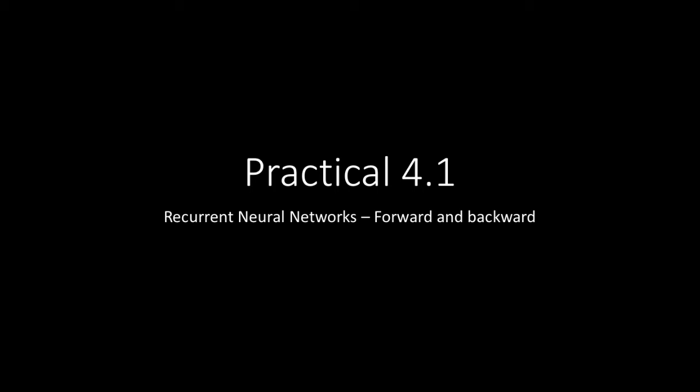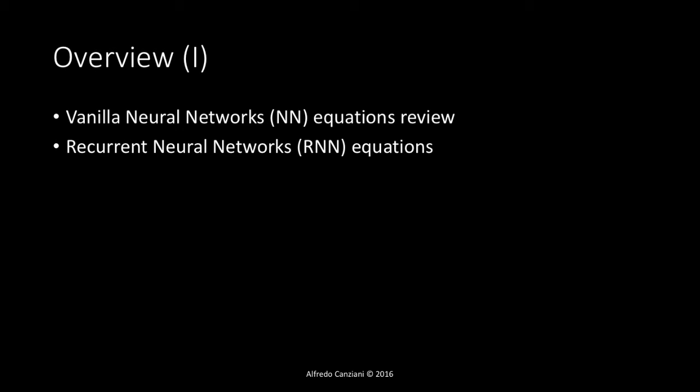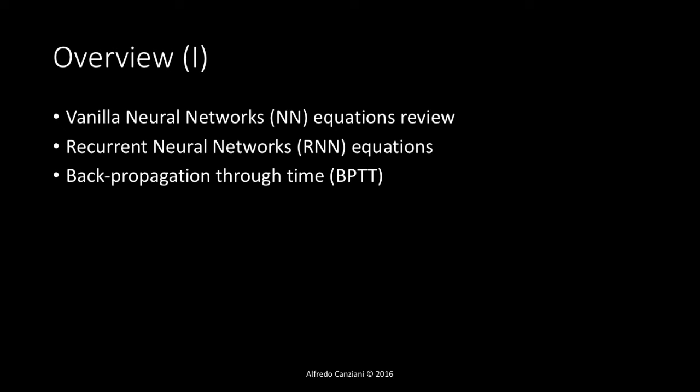In this section we will go through the forward and backward paths for recurrent neural networks. We will start by reviewing the equations for a vanilla neural network with a new notation, which allows us to introduce the equations for forward propagation of recurrent neural networks. Finally, we will see how backward propagation can be applied on an unrolled version of the network. This technique is called backpropagation through time.